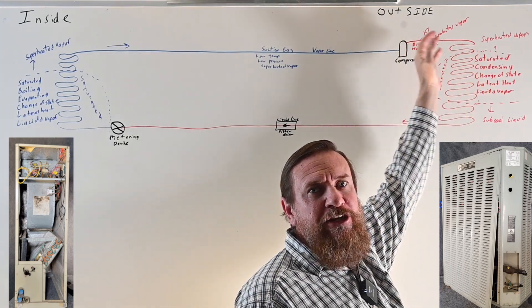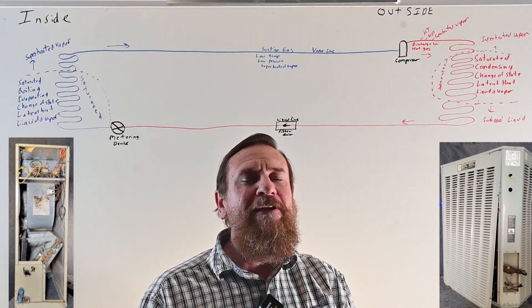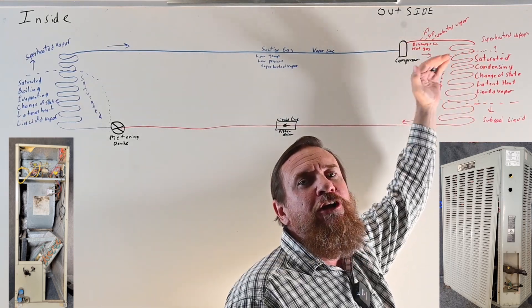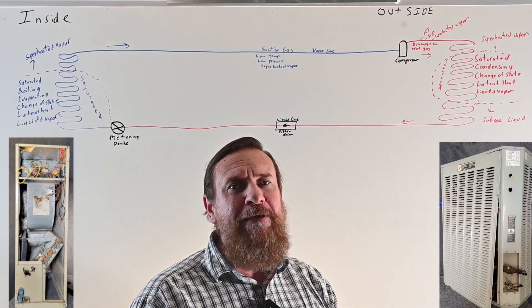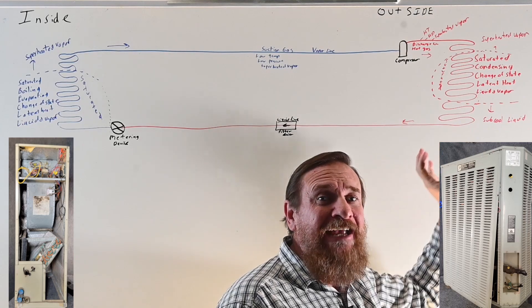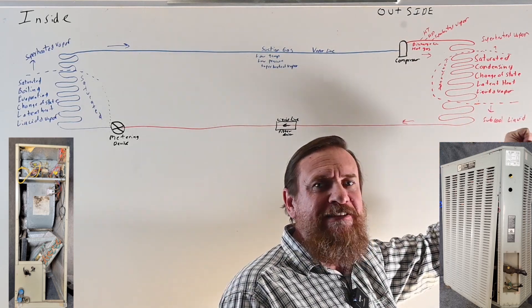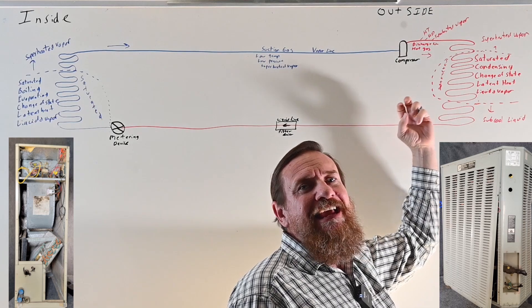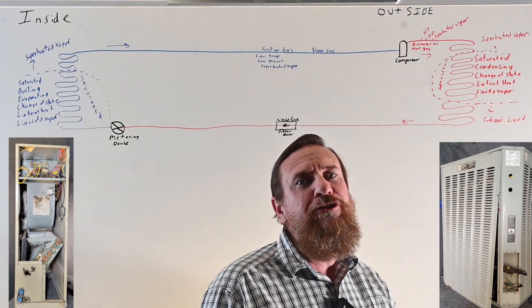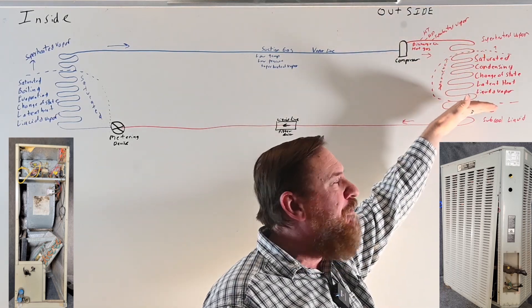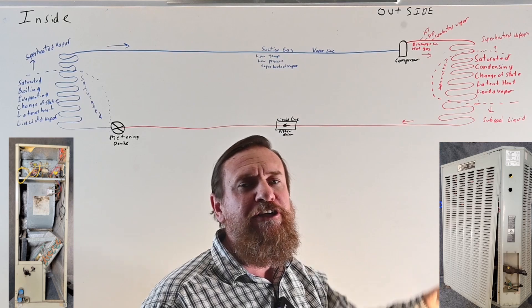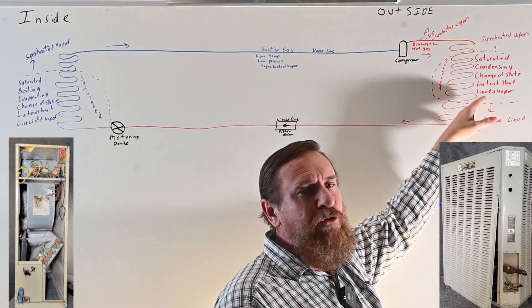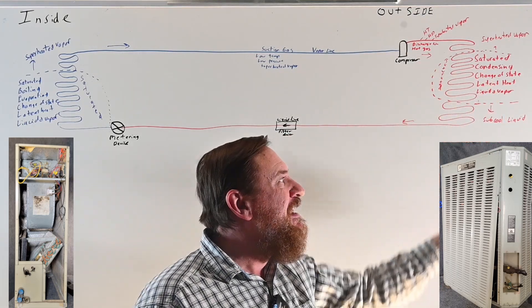From there, we de-superheat it and get it back down to saturation. That's a high number but a very small amount of overall heat. The magic is where we make that refrigerant change state from a vapor to a liquid — that's the mass amount of BTUs happening. The compressor raises the temperature higher than the outdoor temperature, say 120 degrees when it's 100 outside, so heat leaves the warmer refrigerant to the cooler air. We can then sub-cool the refrigerant below saturation, say about 10 degrees.